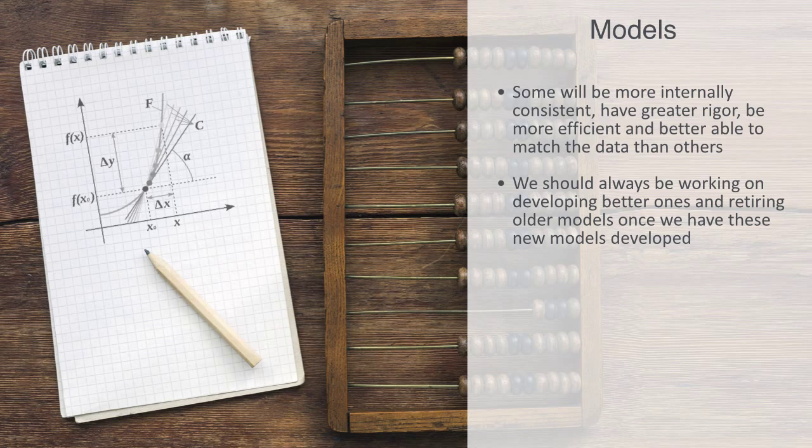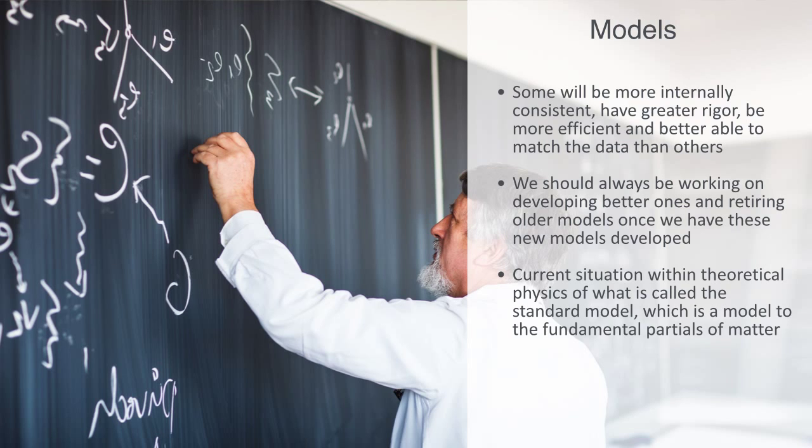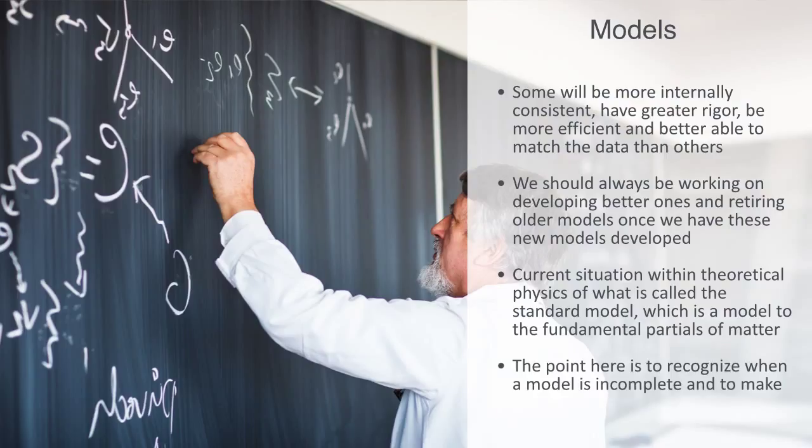As an example of this, we might think about the current situation within theoretical physics, of what is called the Standard Model, which is a model to the fundamental particles of matter and their interactions, sometimes called the theory of almost everything. Although it has many achievements, this nickname is attributed to its limitations, in not being able to fully describe some very important empirical phenomena, surrounding gravity and the expanding universe among others. The Standard Model is both used day in and day out by researchers, and also recognized as likely being just a stepping stone to a more fundamental and more inclusive model, that researchers are at the same time working on under the name of the theory of everything. The point here is to simply recognize when a model is incomplete and to make that explicit.